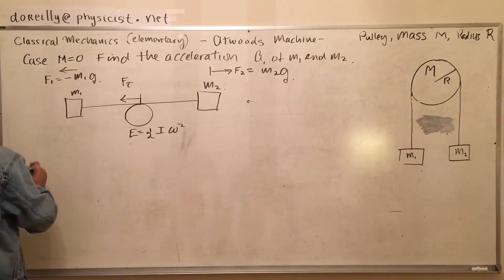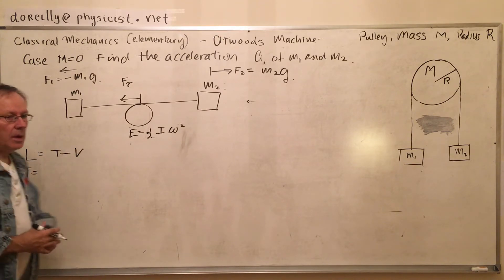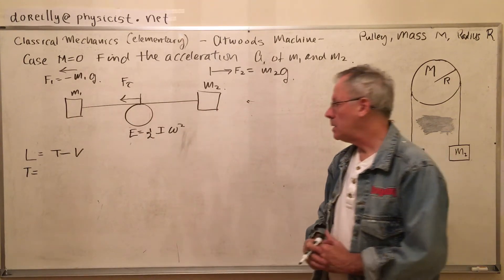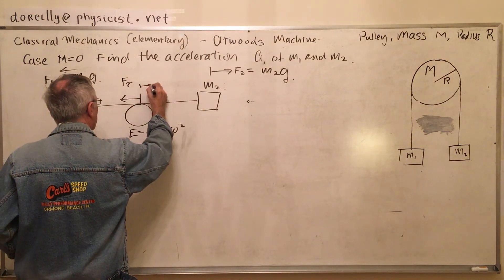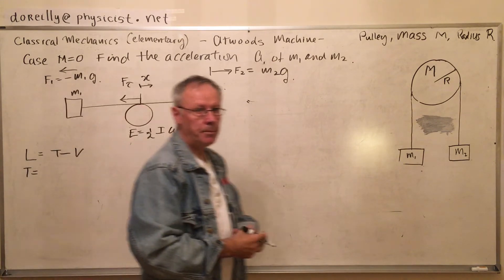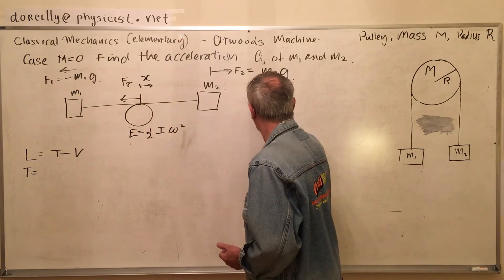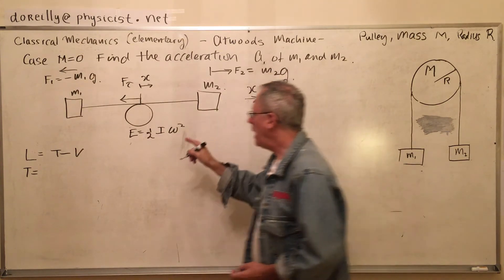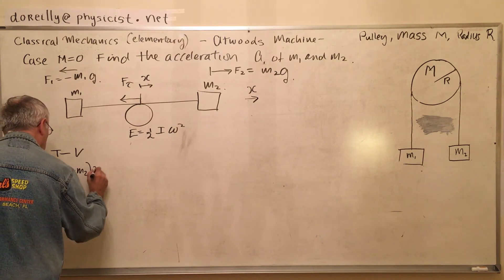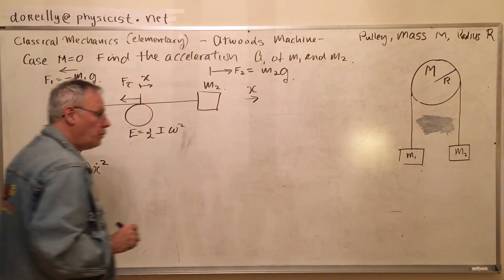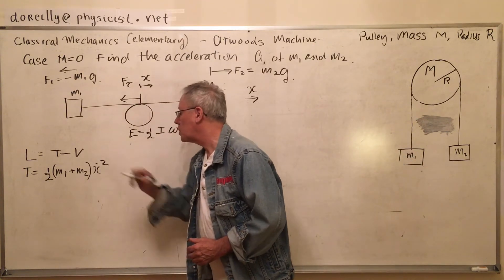For Lagrange's equation we have the Lagrangian first. First of all we need the total kinetic energy of the system. Let's call the displacement x — the displacement of this chord as it moves in this direction is x. The kinetic energy is a half m1·x_dot squared plus a half m2·x_dot squared, which adds together to give a half (m1 + m2)·x_dot squared. But what else?